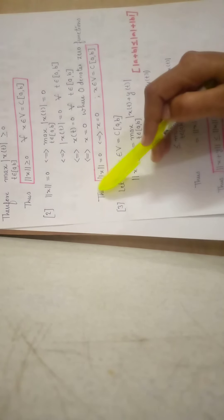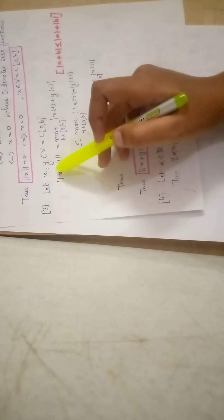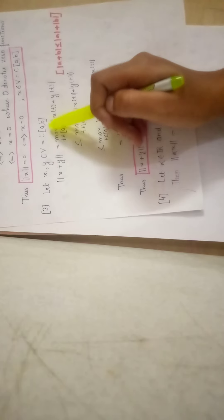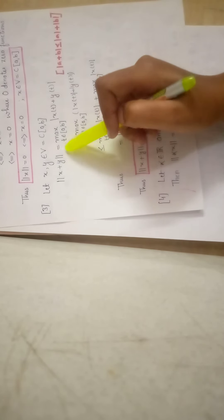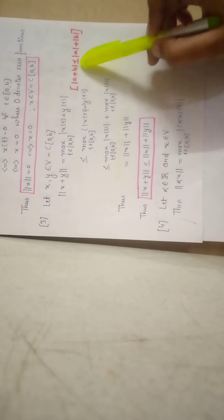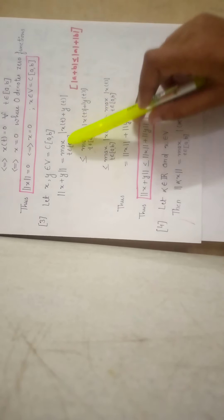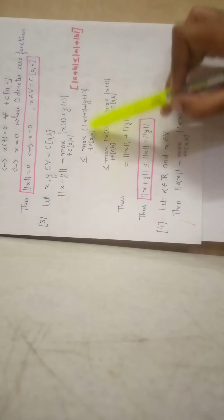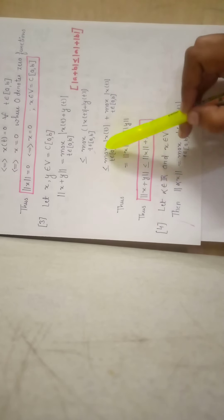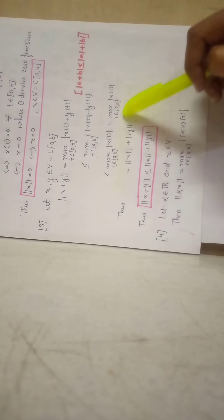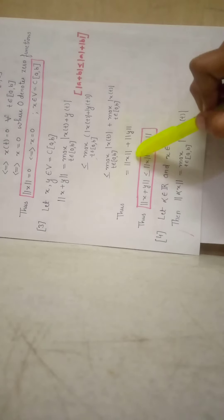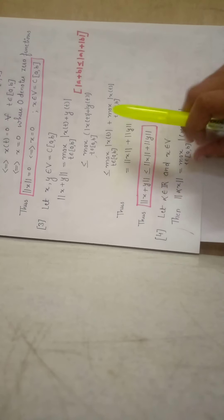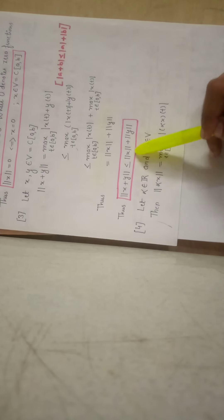For the third property, let x, y ∈ V = C[a,b]. Then ||x + y|| = max_{t ∈ [a,b]} |x(t) + y(t)|. Since |a + b| ≤ |a| + |b|, this is ≤ max_{t ∈ [a,b]} (|x(t)| + |y(t)|) ≤ max_{t ∈ [a,b]} |x(t)| + max_{t ∈ [a,b]} |y(t)| = ||x|| + ||y||. Thus the triangle inequality ||x + y|| ≤ ||x|| + ||y|| is satisfied.